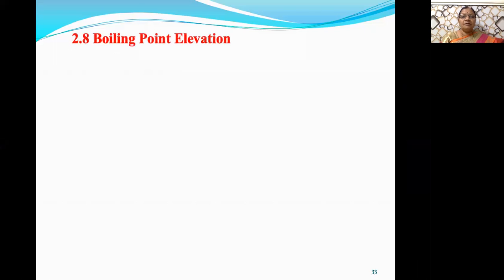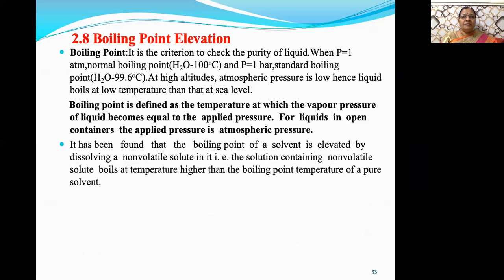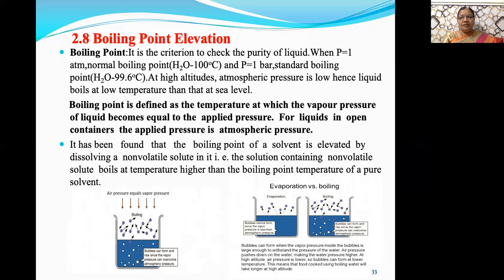In a previous lecture, you studied the second colligative property, that is boiling point elevation. The boiling point is defined as the temperature at which the vapor pressure of a liquid becomes equal to the atmospheric pressure. When the pressure is one bar, it is called the standard boiling point. When it is one atmosphere, it is called the normal boiling point.